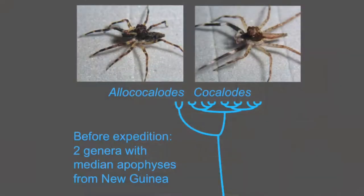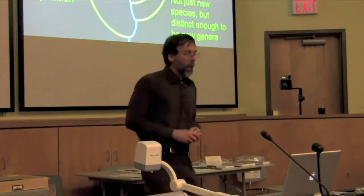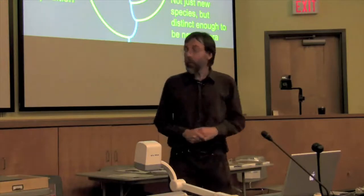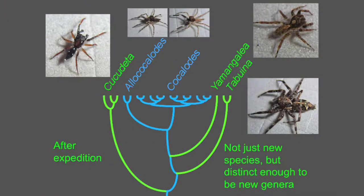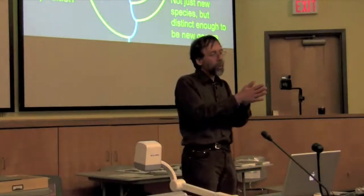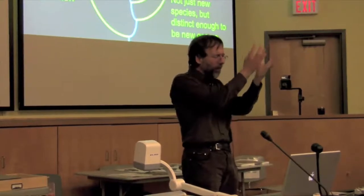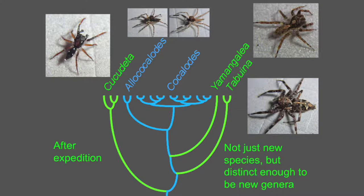So before the expedition, this is what we knew from Papua New Guinea. We had these two things, Allococolodes and Cocolodes, two genera, they had median apophysis. I was really glad to see them, I collected them, that was great. We got fresh specimens, we could do more studies with them. But after the expedition, we not only found this one at the left, the little brown one that I've been telling you about, but we also found a couple extra, the one at the upper right and the one at the right, that also have a median apophysis. So from a point where we knew about these two isolated genera, isolated in the phylogenetic tree, suddenly there's this whole little radiation that we discover with things that are distinctive enough because of the fact they're on separate branches here, that we can call them new genera.